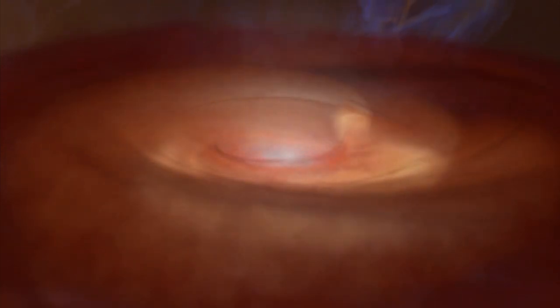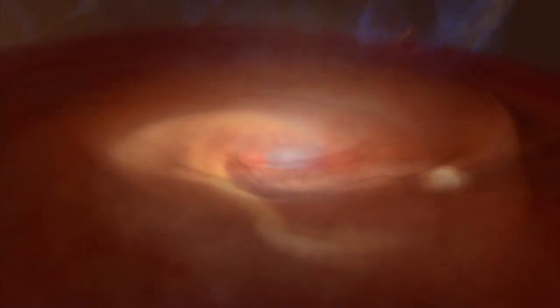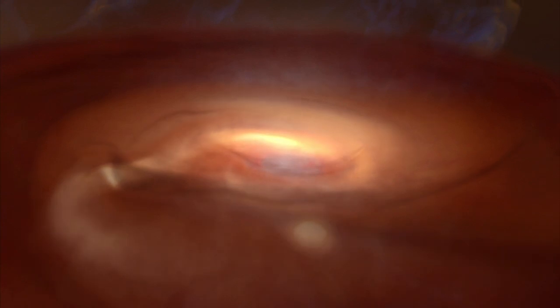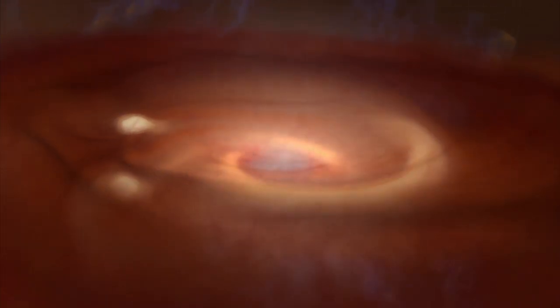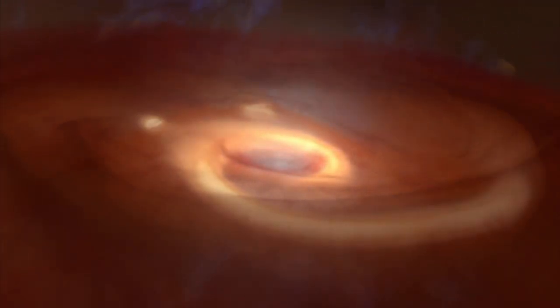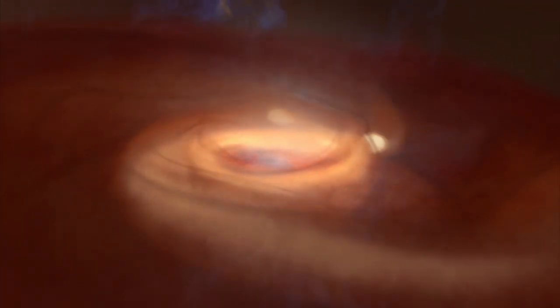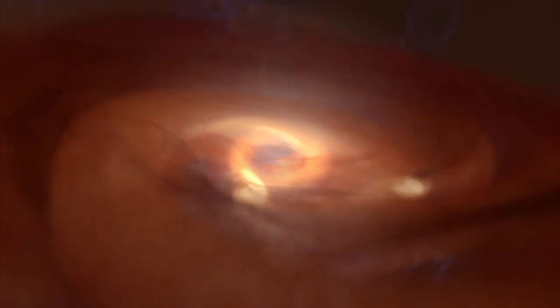In this computer model, the disk continues to accumulate gas and dust from its surroundings for thousands of years. Eventually, the disk fragments, producing dense, bright structures. These may become sites where giant planets form.